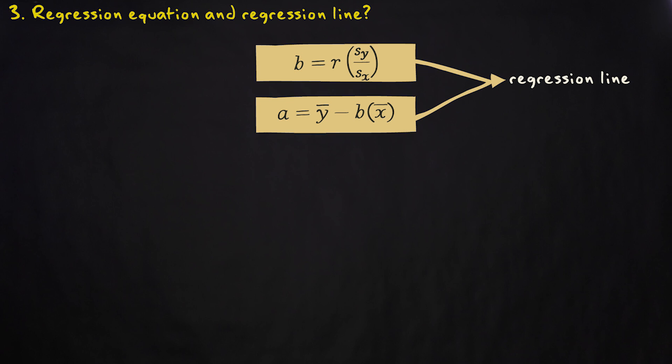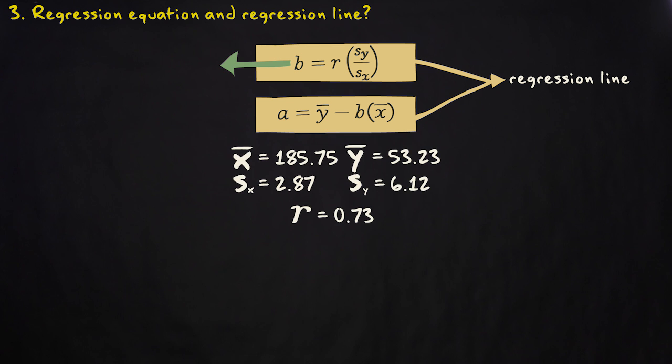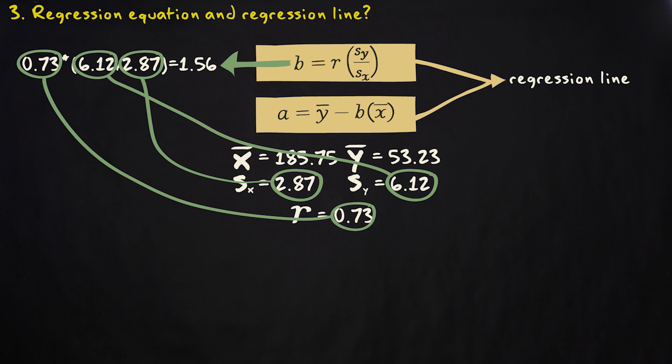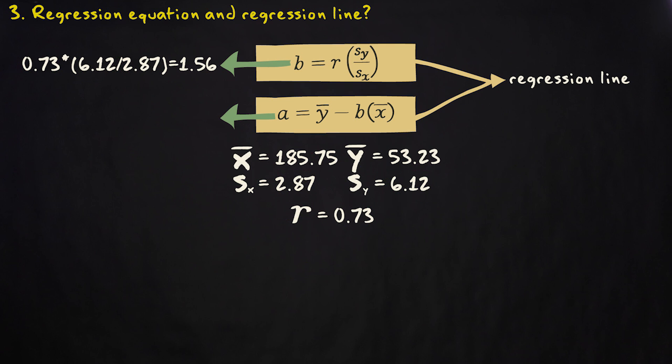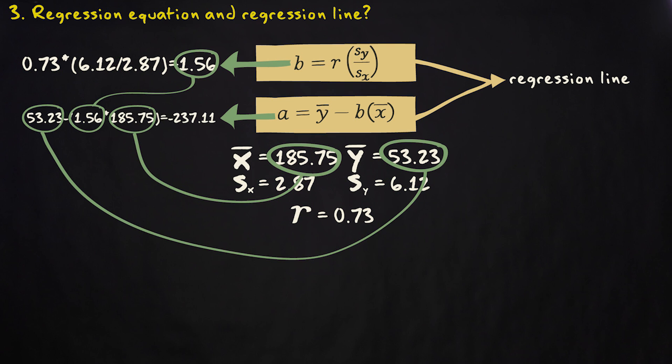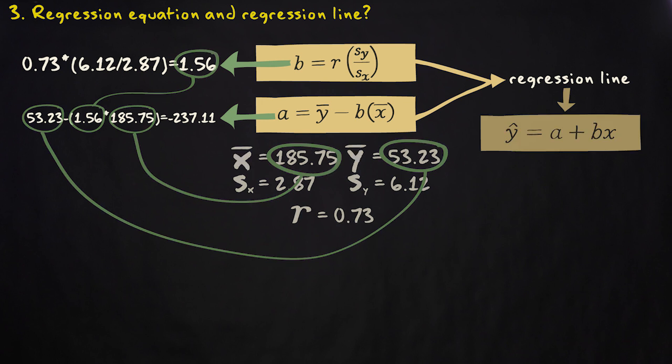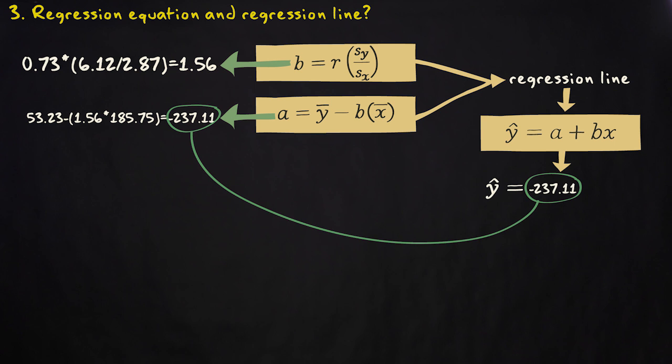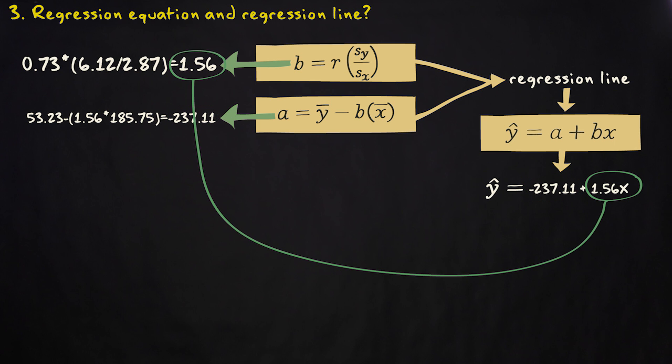We already have all our necessary ingredients, so now we can use the formulas. The regression slope is 0.73 multiplied with 6.11 divided by 2.87. That makes 1.56. The intercept is 53.23 minus 1.56 multiplied with 185.75. That makes minus 237.11.